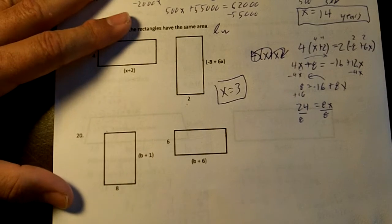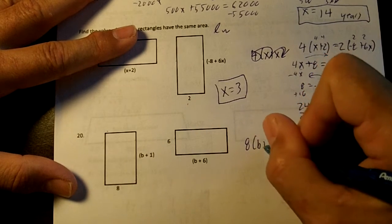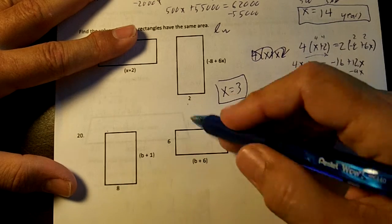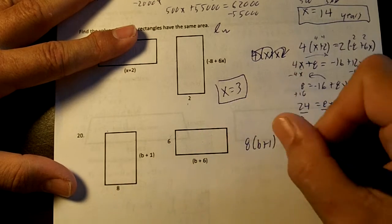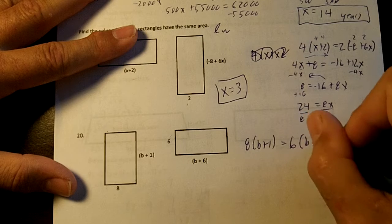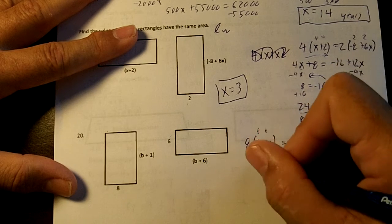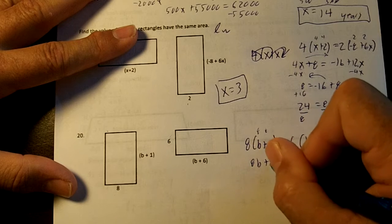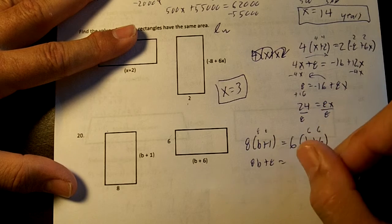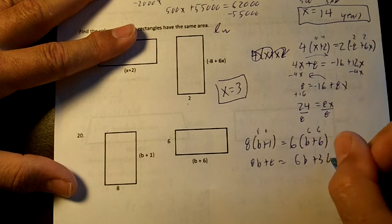Right here we're going to do 8 times b plus 1. We're going to do length times width, and then 6 times b plus 6. So we're going to get, distribute your 8. You're going to get 8b plus 8 equals, distribute the 6. 6b plus 36.